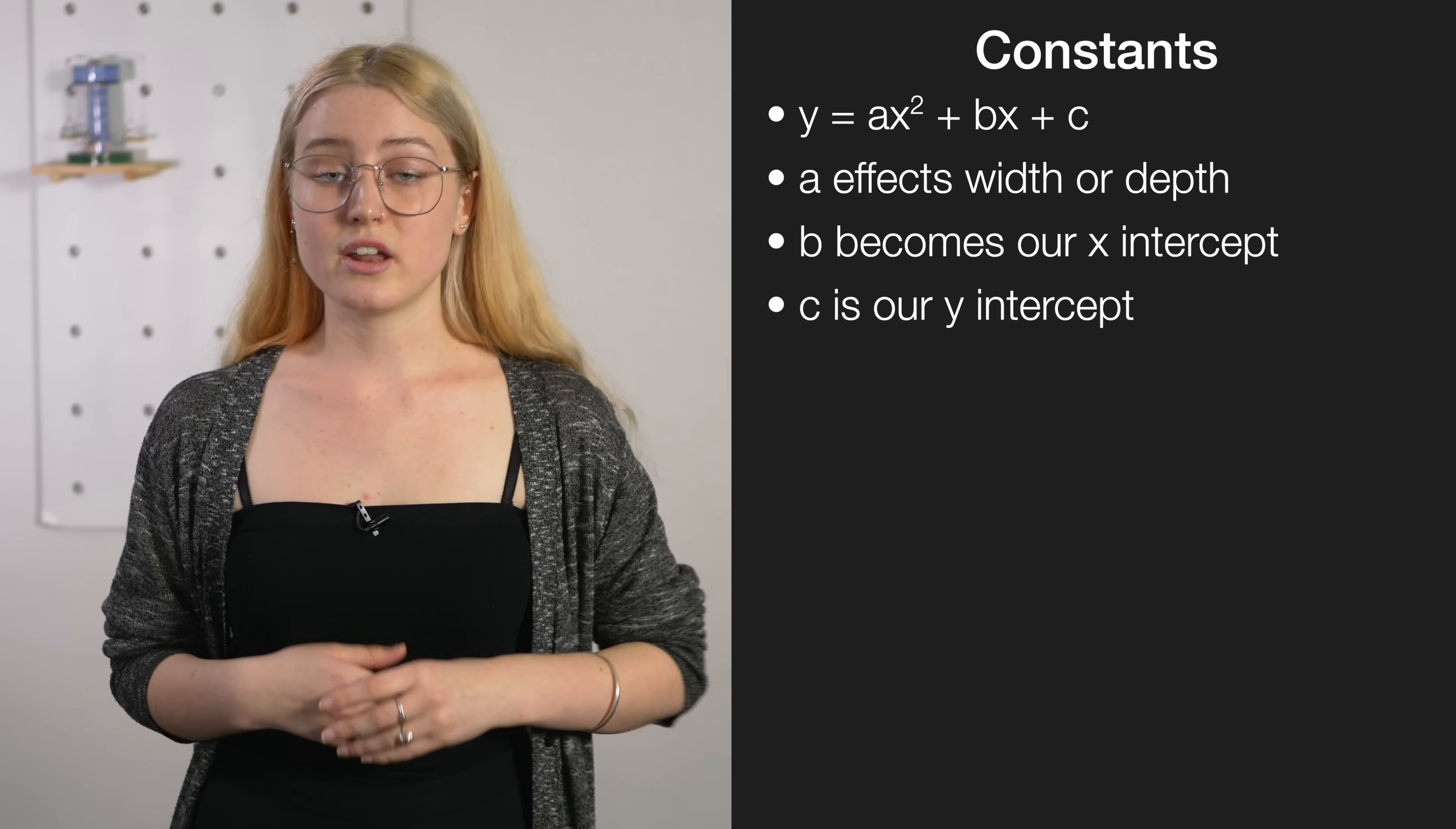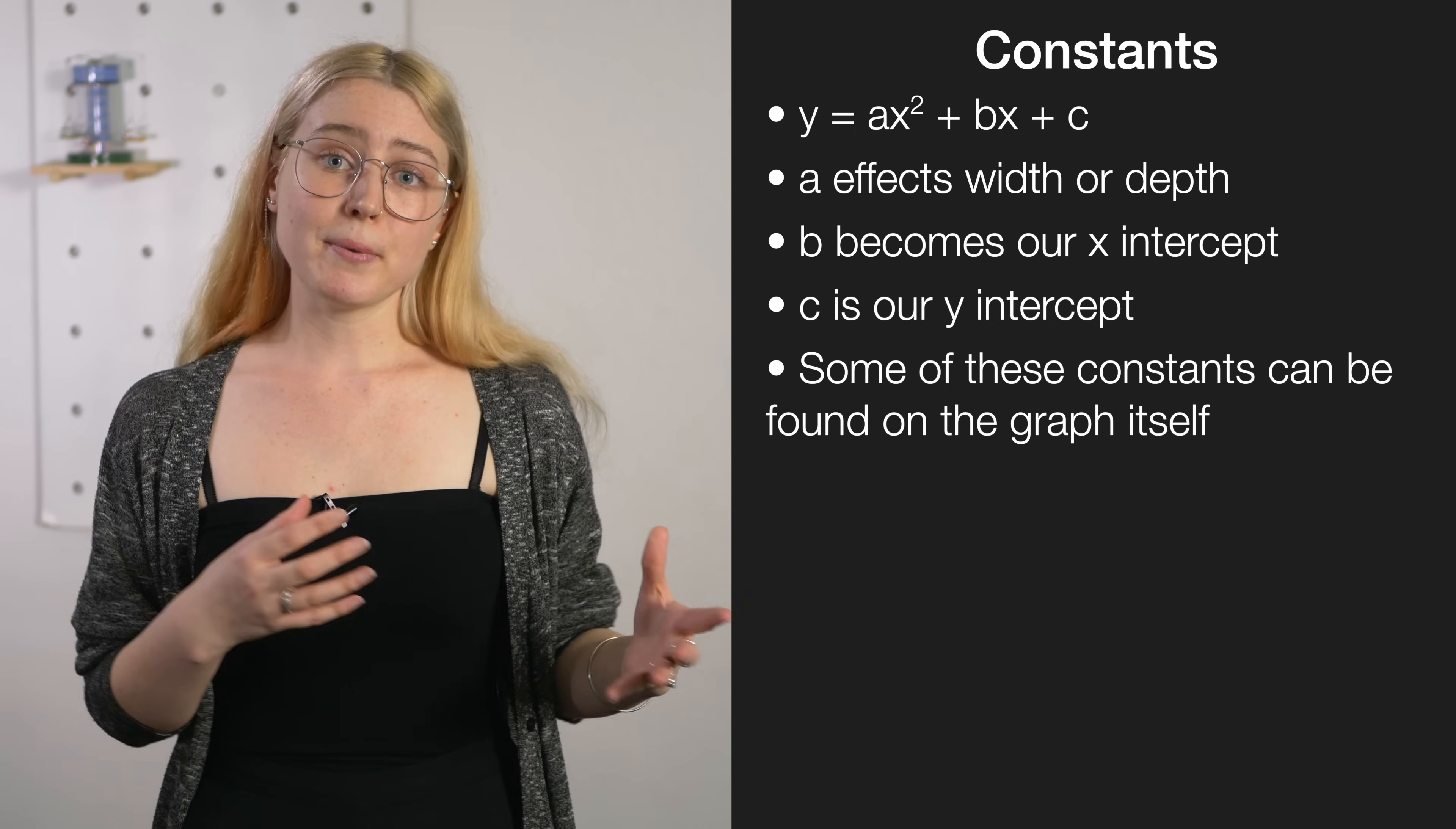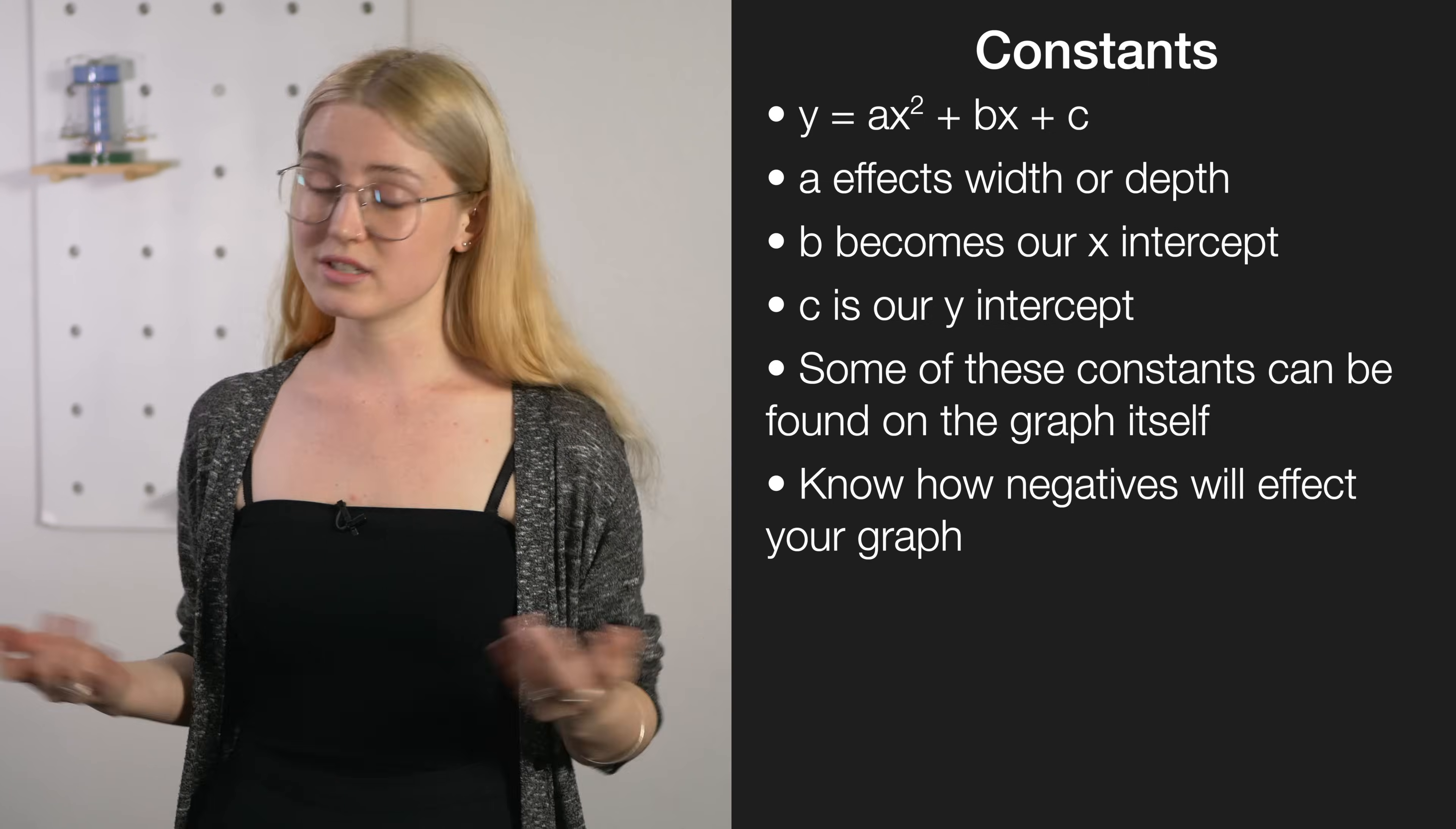Quite often what students do if they have an unknown constant is just sub in other points which is a really useful skill but quite often as well we can just get these points straight by looking at the graph. However we would recommend using an equation if some of your important points like a y intercept doesn't have a clear point on the graph. By practicing these different transformations you can get a really good feel for what's going on and what you should be expecting in your graphs. A really good key point is knowing when negatives are and how they will affect your graph. So in a parabolic relationship it's going to turn your entire thing upside down so it looks like a frowny face instead of a smiley face.